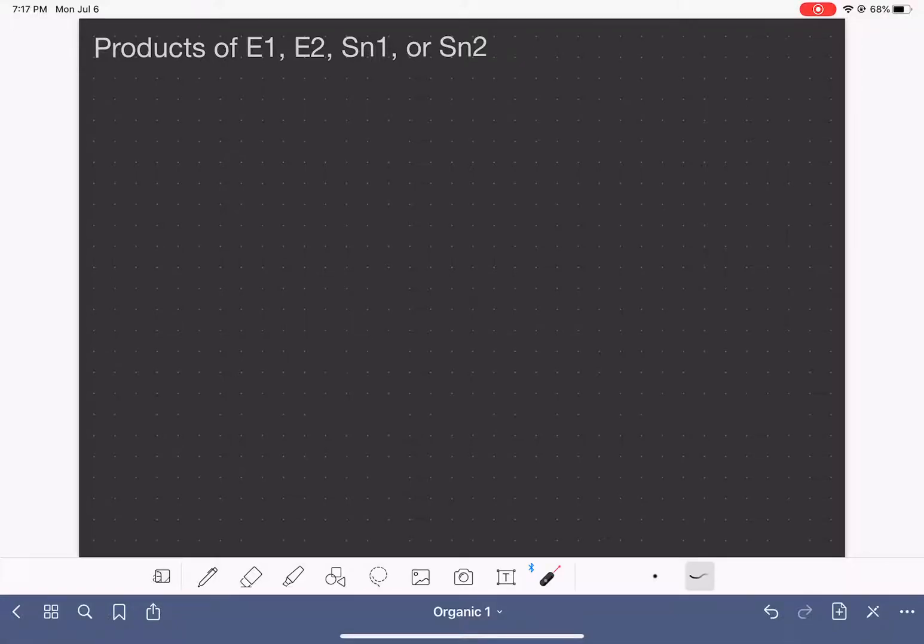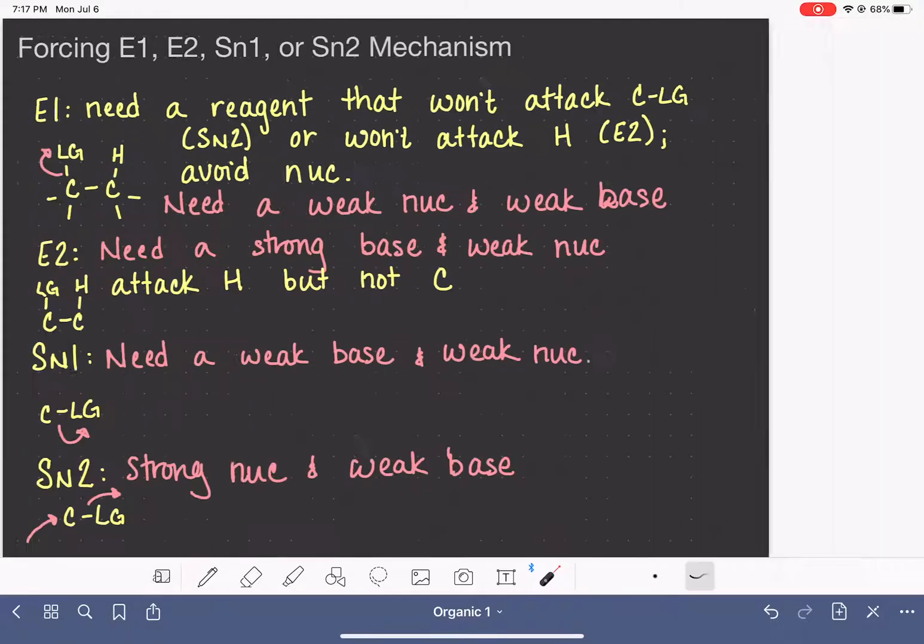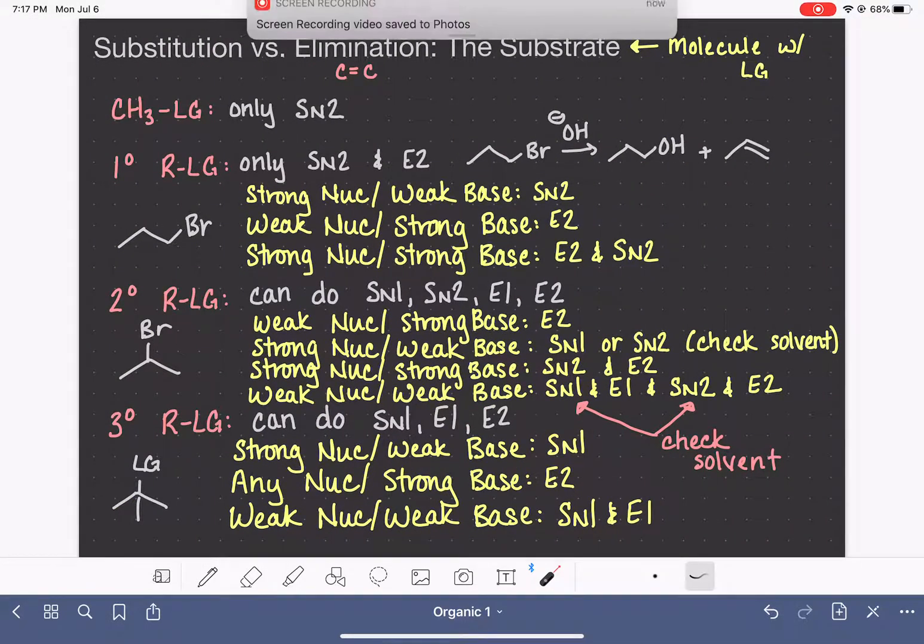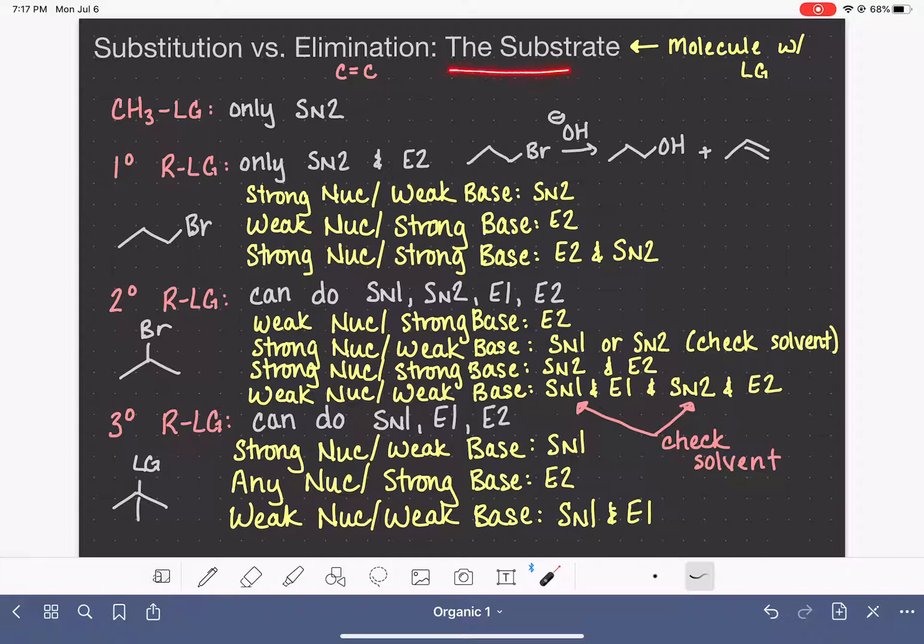In the last few videos, we've been really focusing on how to distinguish E1 from E2 from SN1 from SN2. This is all really complicated information. We started talking about looking at the structure of the substrate, the molecule that has the leaving group.